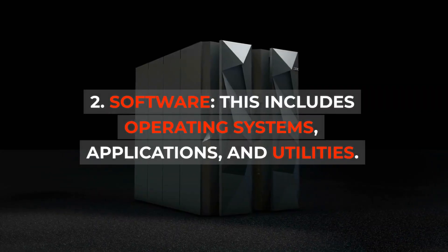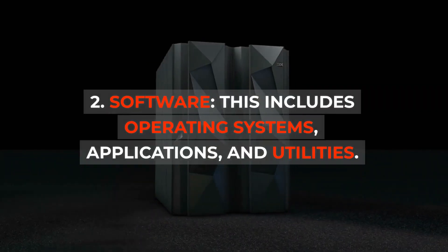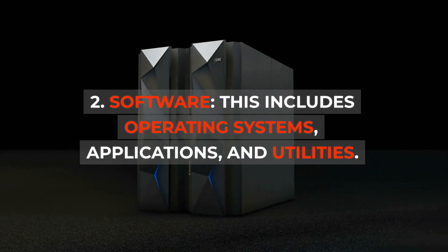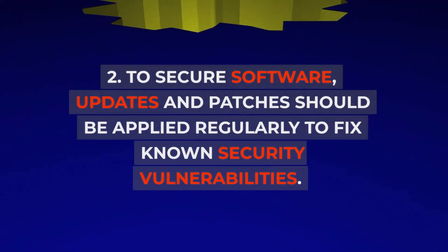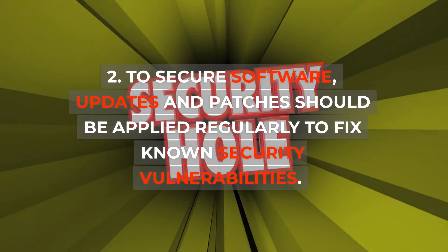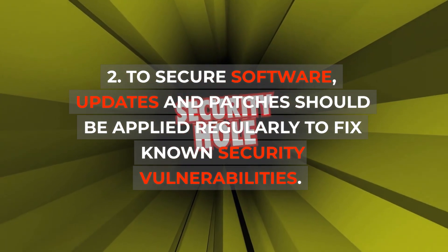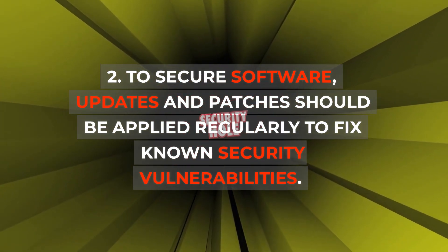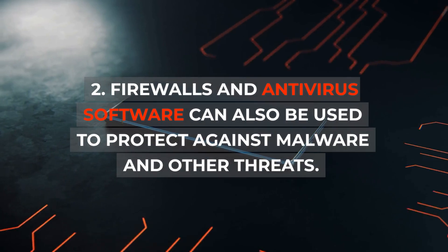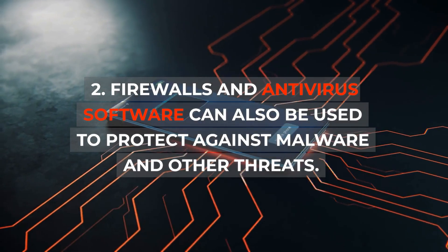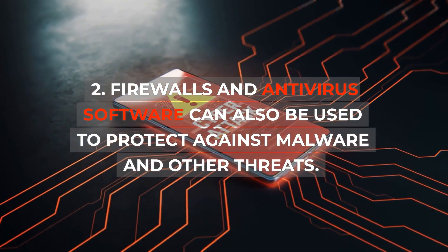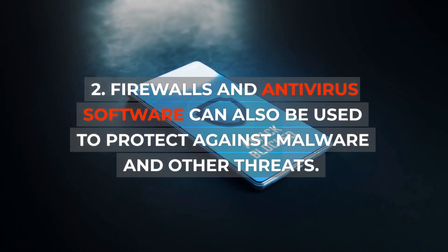2. Software: This includes operating systems, applications, and utilities. To secure software, updates and patches should be applied regularly to fix known security vulnerabilities. Firewalls and antivirus software can also be used to protect against malware and other threats.